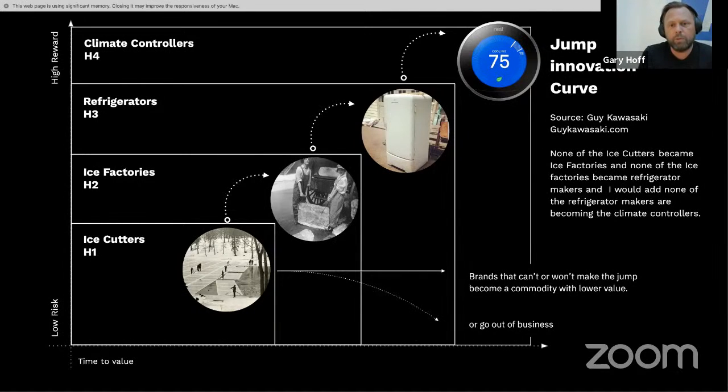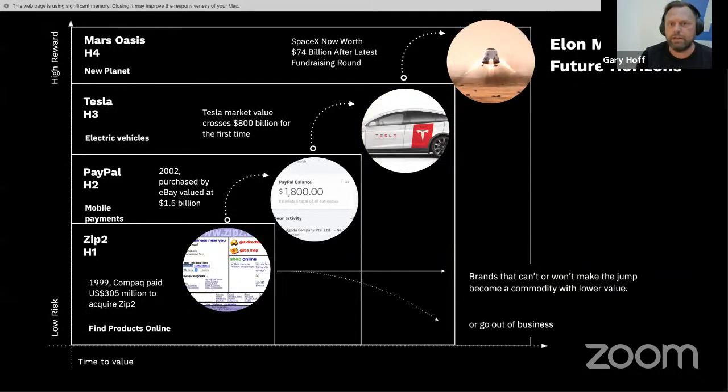And the one build I would put on Guy Kawasaki's analogy is none of the refrigerator companies are thinking about becoming the next Nest to control climate. Let's take a quick look at Elon Musk's horizons or some of his possible horizons. When he started Zip2, maybe that was his first horizon. He sold that to Compaq. Zip2 isn't around anymore. Then he went to PayPal.